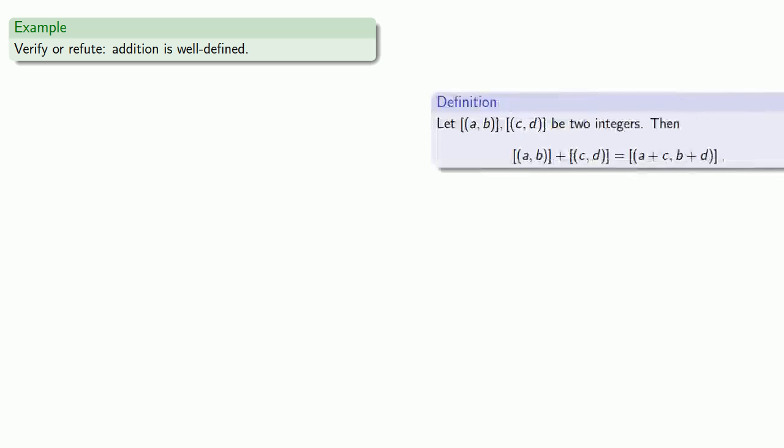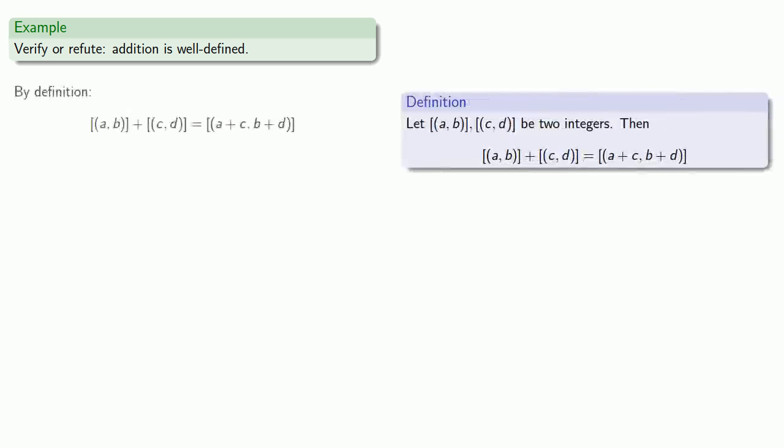And remember, this falls under the category of verifying or refuting that addition is well defined. So let's pull in our definition. By definition, the sum of two integers is this. Being well defined means that it doesn't matter what representatives we use in our computation.